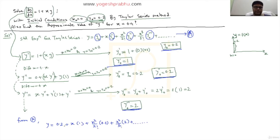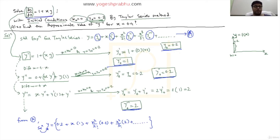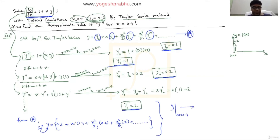This is the expression for y written in terms of powers of x, and this is the solution to our differential equation. As you go further in the series, the terms become smaller and smaller. Now, to find the approximate value of y when x equals 0.4, we simply replace all x in our expression with 0.4.